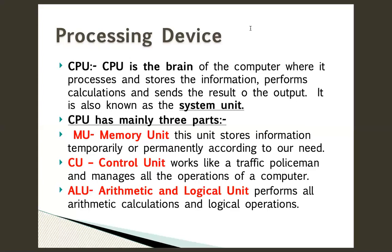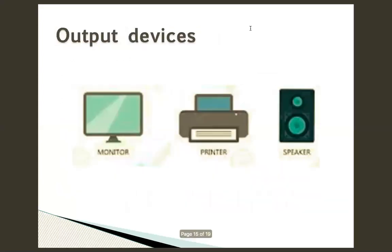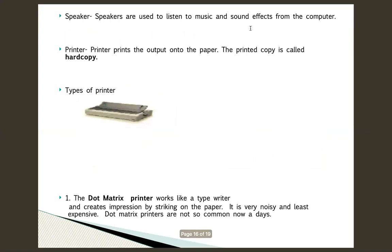Now comes the output devices: monitor, printer, speaker, and projector — they are all output devices. They always display the result. Let us start with speakers — speakers are used to listen to music and other sounds from the computer.